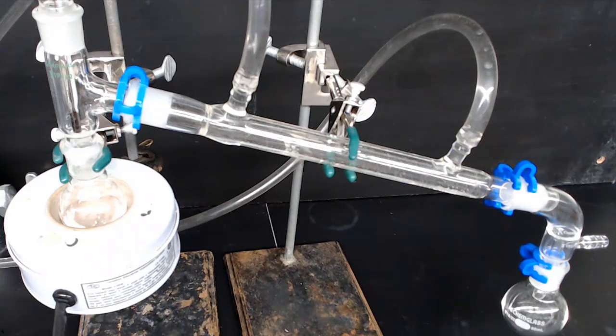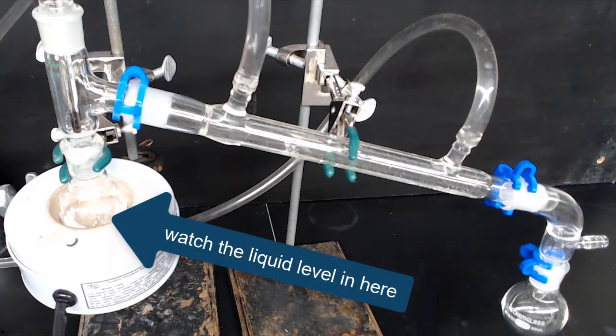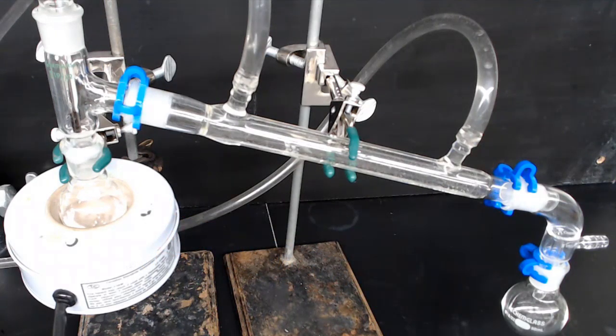The other thing you want to watch for is keep an eye on the level of the material in the distilling flask, the flask that gets hot. You don't want to distill to dryness. You don't want to keep heating the flask until there's nothing left in the bottom. You need to leave a little bit in there.